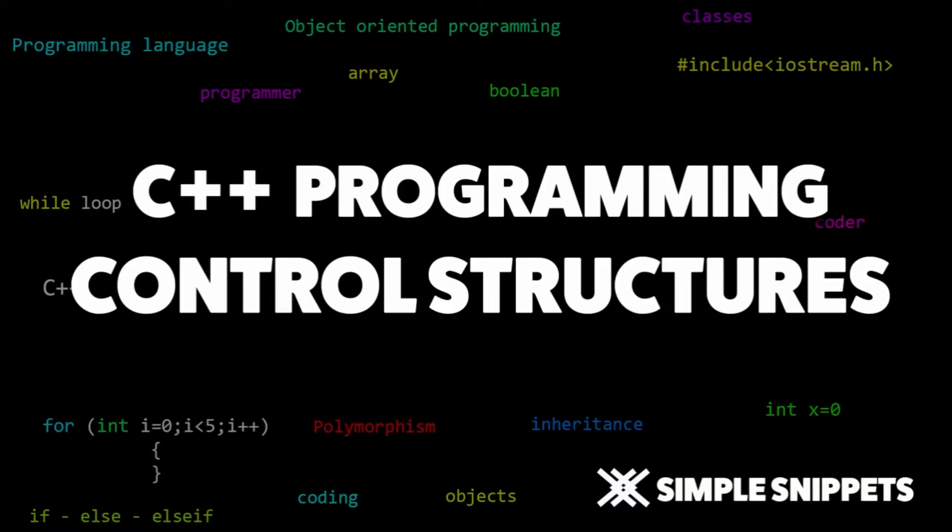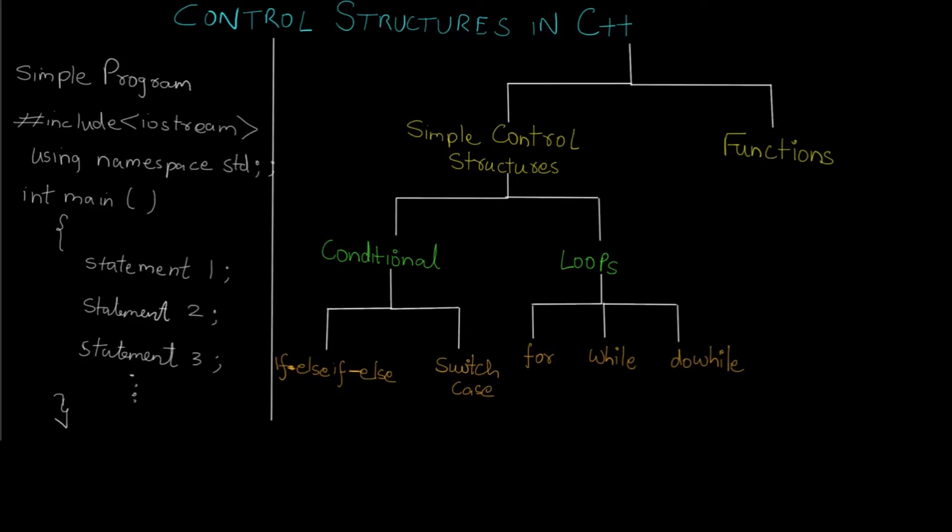What are control structures in C++? Let me give you an example to show how the program flow is when a program is executing. As you can see on the screen on the left side I have a simple program which I have written and you can see the basic structure of the C++ program.